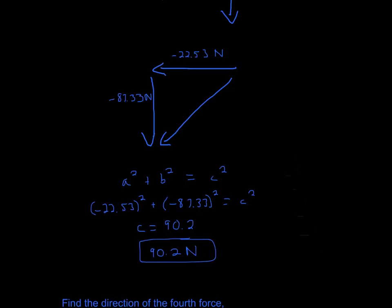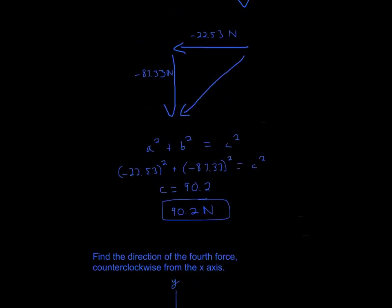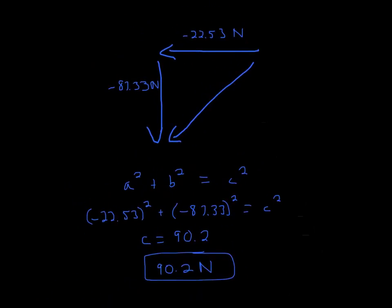For sig figs: the original forces were 100 Newtons (4 sig figs? or 1?), then 3 sig figs, and 3 sig figs — we use the least, which is 3 significant figures. So our final magnitude answer is 90.2 Newtons.